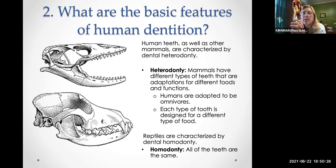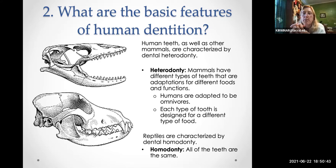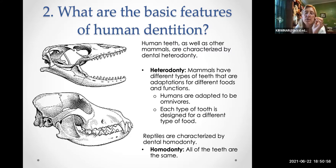Think about teeth like finch beaks — each finch beak is a tool for a different food, and each type of tooth (incisor or canine) is a tool for a different food. Most — really all — mammals are characterized by heterodonty: different types of teeth adapted to different foods, and maybe different selection pressures like having long canines for defense. Each type of tooth is designed for a different type of food.